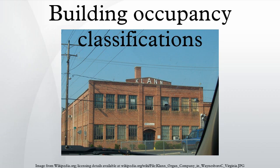A1: buildings intended for the production and viewing of performing arts or motion pictures. A2: buildings intended for food and/or drink consumption. A3: buildings intended for worship, recreation or amusement, and other assembly uses not otherwise classified. A4: buildings intended for viewing of indoor sporting events and activities with spectator seating. A5: buildings intended for participation in or viewing outdoor activities.